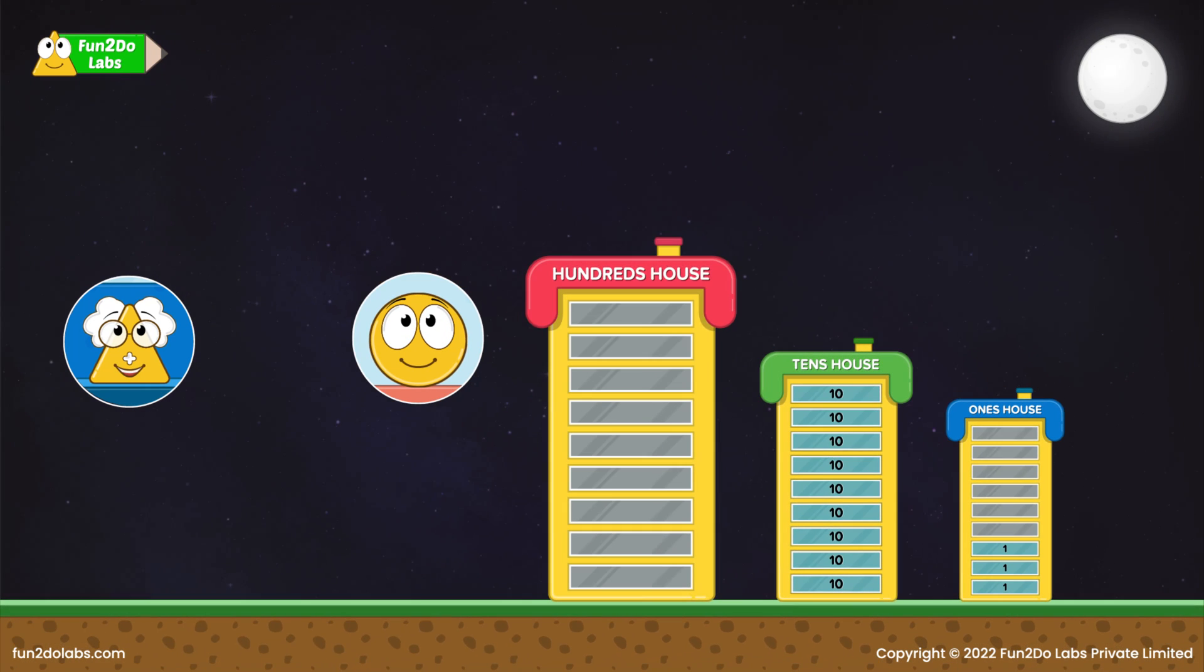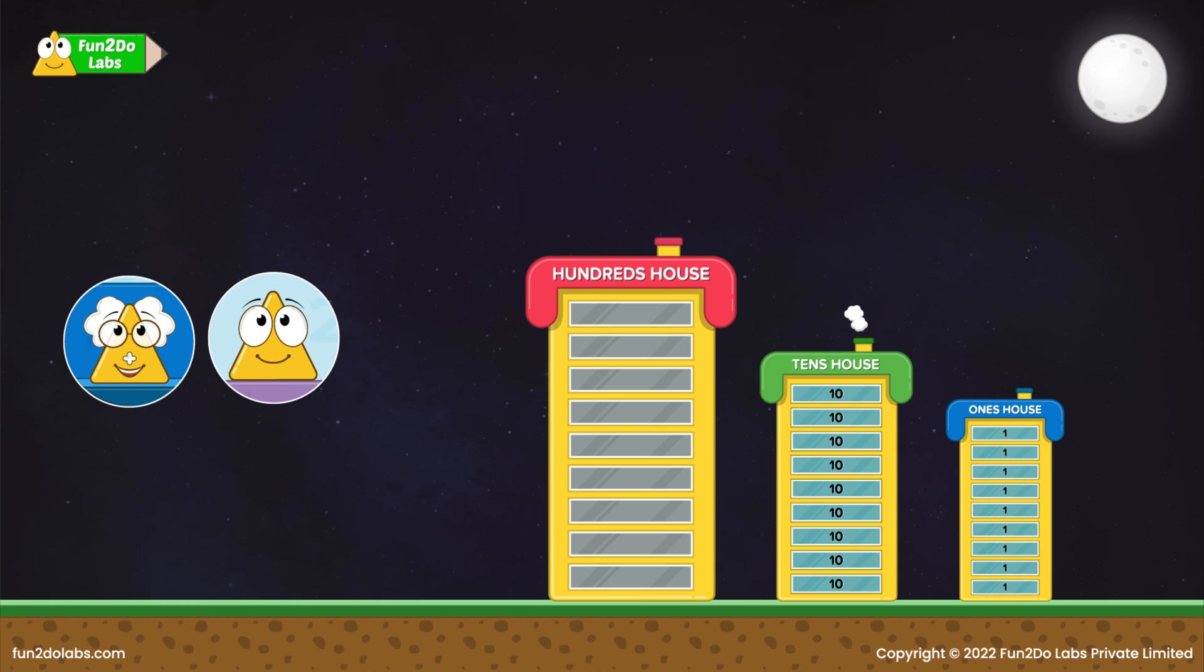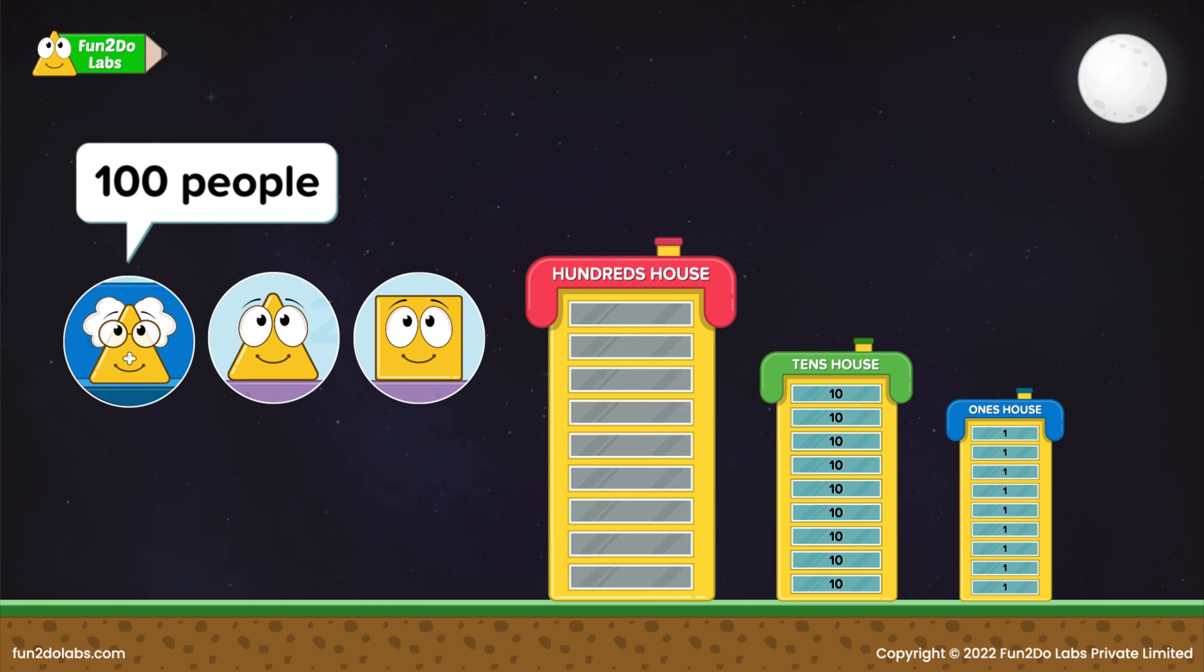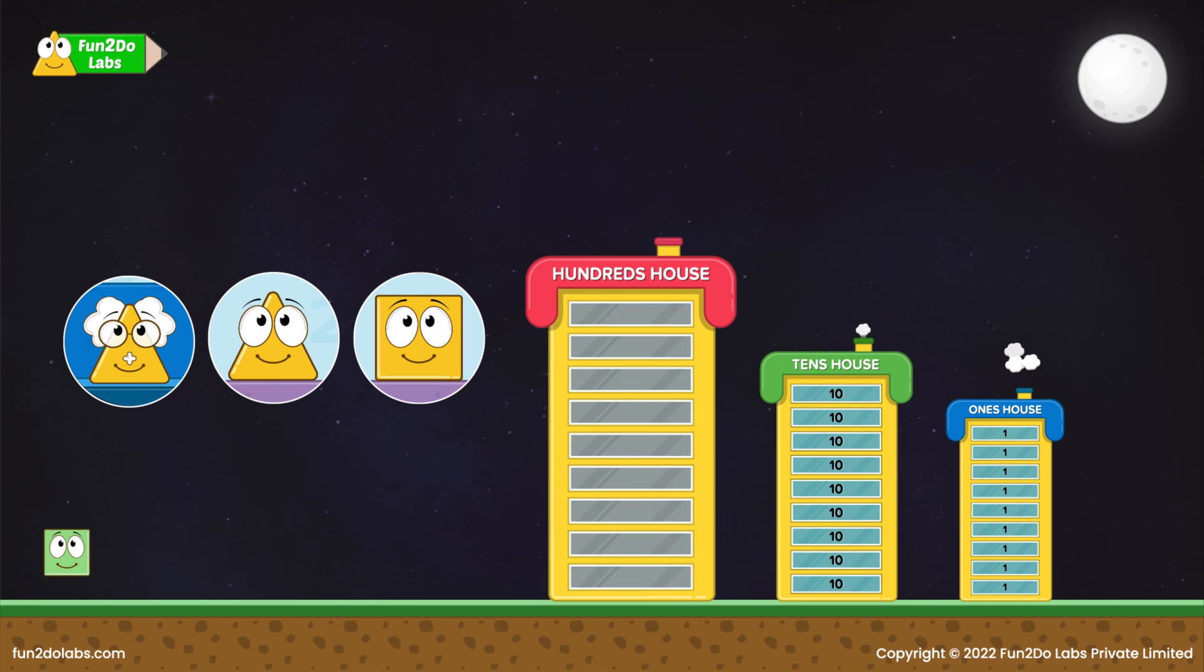I decided to make another building, but a very large one this time. I called it hundreds house. Can you guess how many people could live there? As ten people could live on each floor in tens house, I guess... Yes! The hundreds house also had nine floors, but this time each floor could accommodate hundred people. Hundred people on each floor? Wow, the house must be huge!